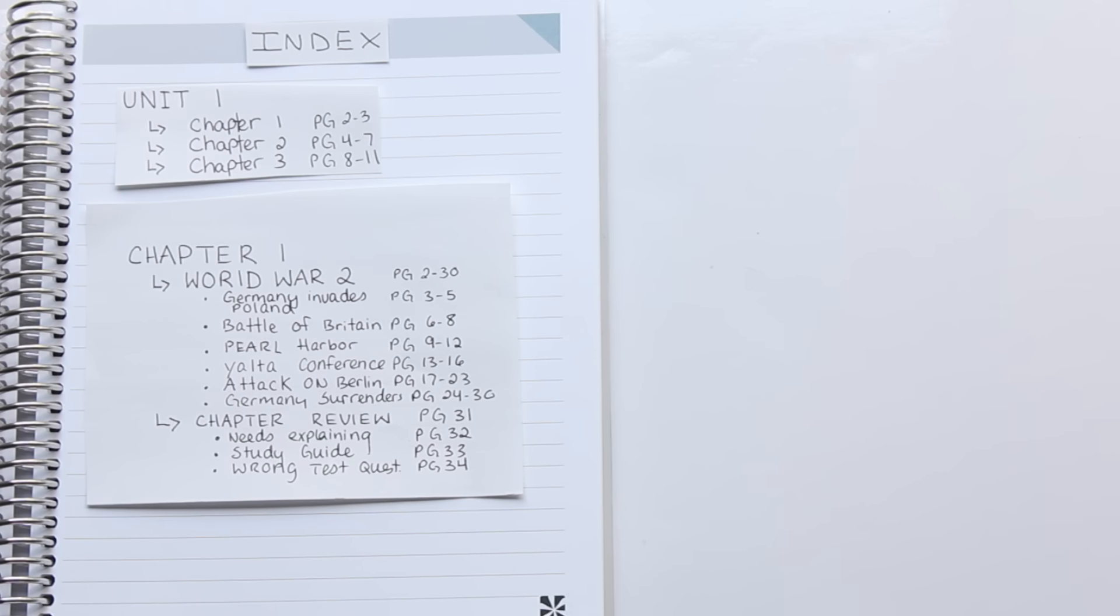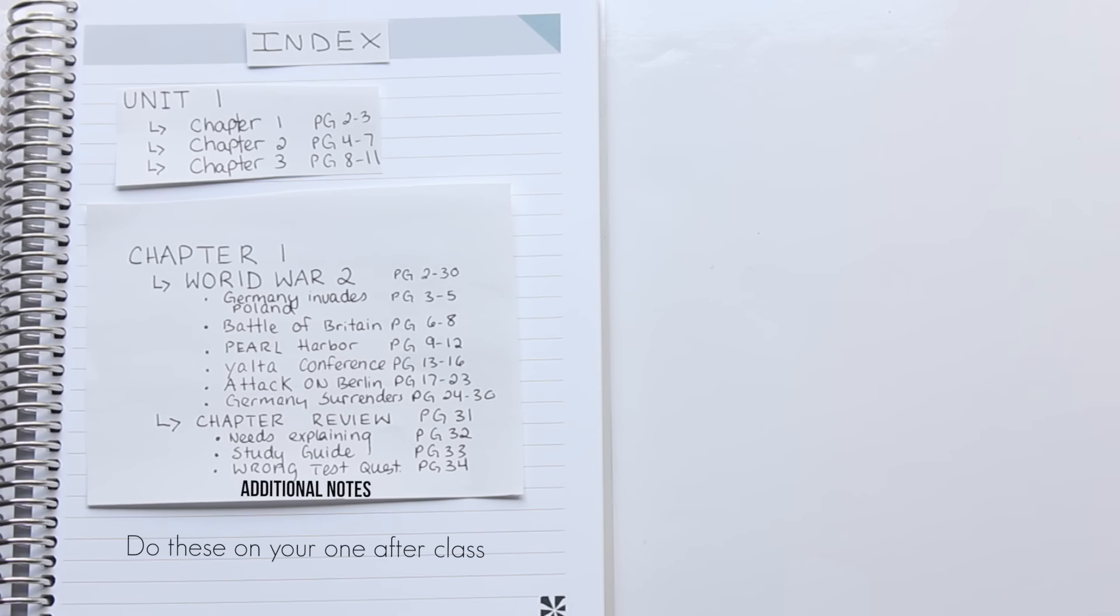The next way is dividing up the chapters into subjects that are within the chapters and the page numbers that are with the reference. So we chose World War 2 and it has a list of all of the important dates and where I can find them in my notes. So as I'm flipping through, if I want to know exactly where my notes are about Pearl Harbor, I know that they're from pages nine to twelve.